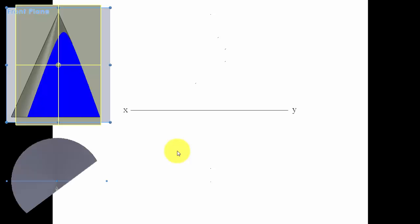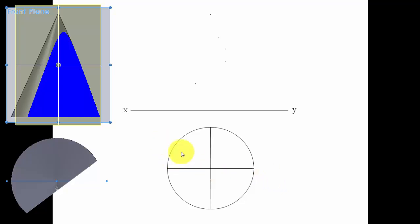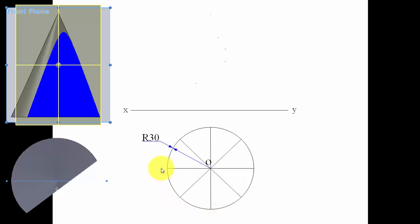Start by making an XY line. Since the cone rests with its base on HP, the true shape of the base is seen from the top, so we start by making a circle in the top view. The circle has a diameter of 60, so radius is 30. Let's divide this circle into eight equal parts and give numbers to each point — starting from point 1, 2, 3, and so on.